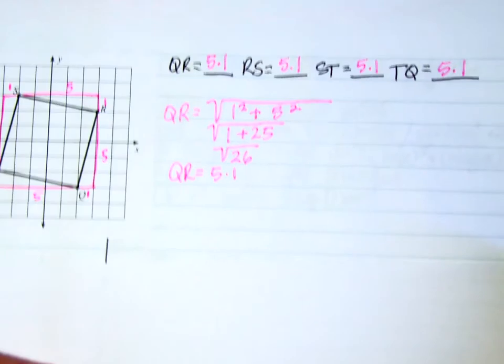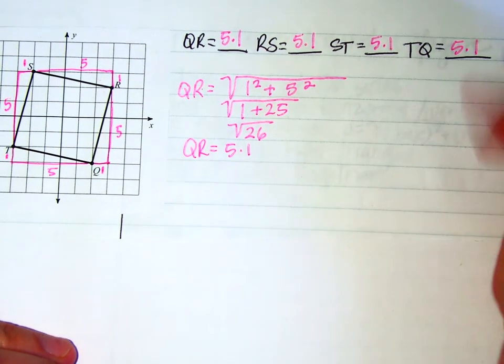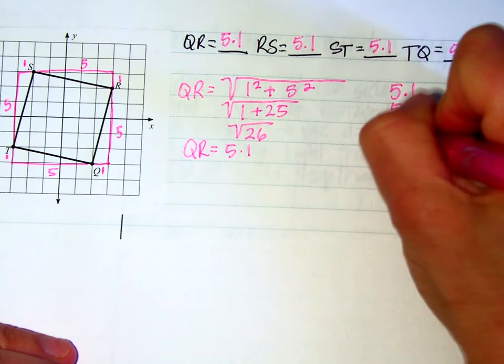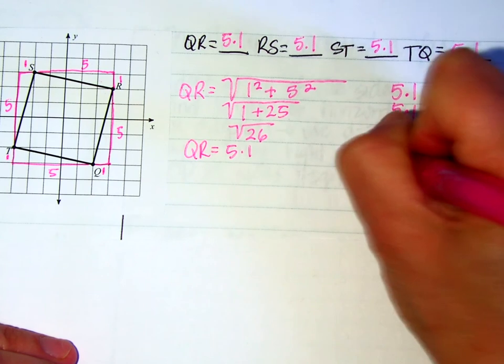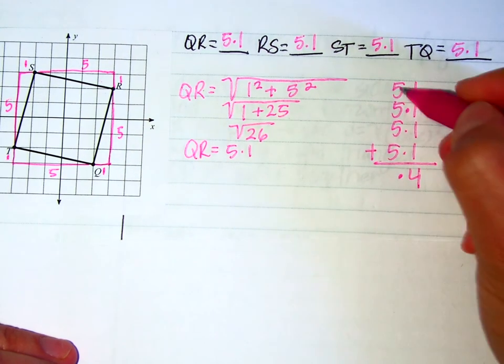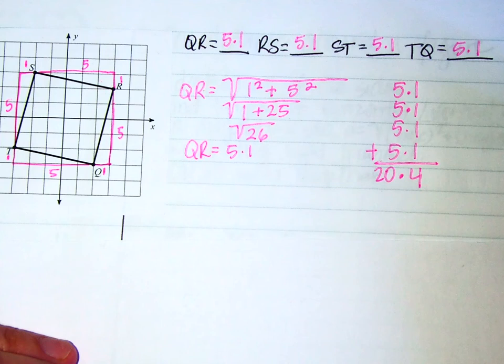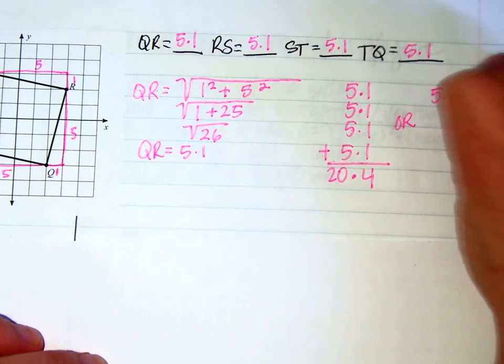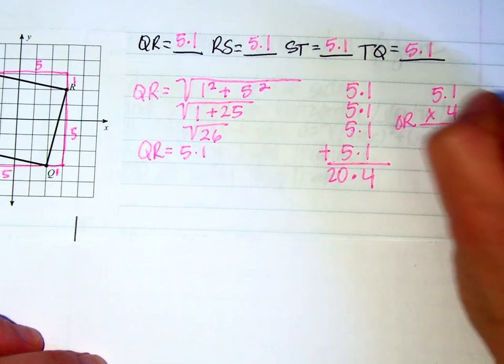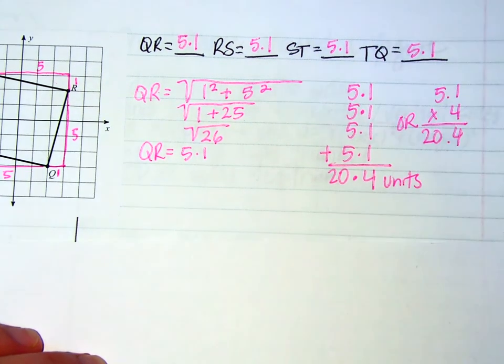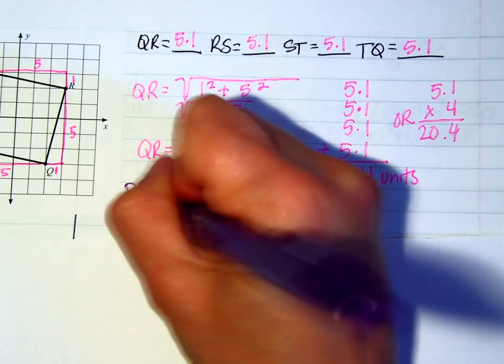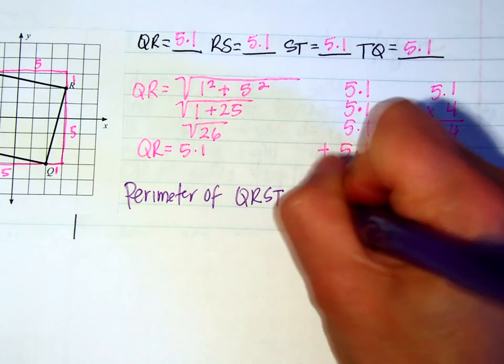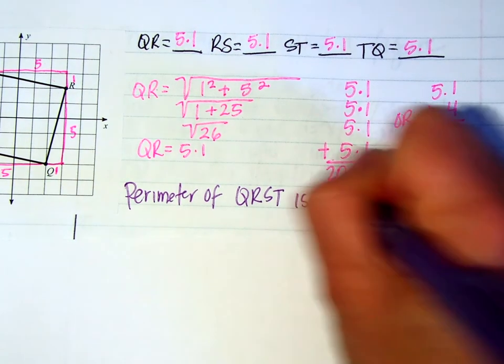So now all we have to do is add all of the sides together. So if you have a calculator, go ahead and use it. I'm going to pretend I don't have a calculator, so I'm going to add them all together like this. So I know 5, 10, 15, 20, 20.4. Or, because I have 5.1 four times, you could have multiplied. And this would have given you the same thing. So the perimeter of figure QRST is 20.4 units.